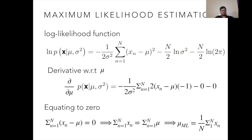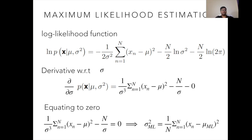You take the derivative of the log likelihood function with respect to mu. Once you equate the right-hand side to zero, you can see that the maximum likelihood estimate of the mean is simply the average of the observed variables. For variance, you again take the log likelihood function, take the derivative with respect to sigma, equate to zero, and compute the maximum likelihood estimate of the variance. We have now computed the mean and variance of the unknown underlying Gaussian distribution from the available set of points.